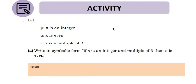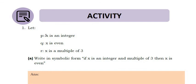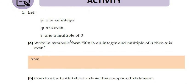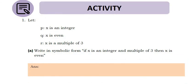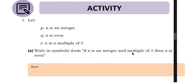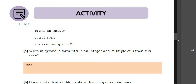In the first activity, we've identified all three variables: p — x is an integer, q — x is even, r — x is a multiple of three. We're asked to write in symbolic form: 'if x is an integer and a multiple of three, then x is even.' We're working with three variables, so let's break it down simply. We see an and connector being used.